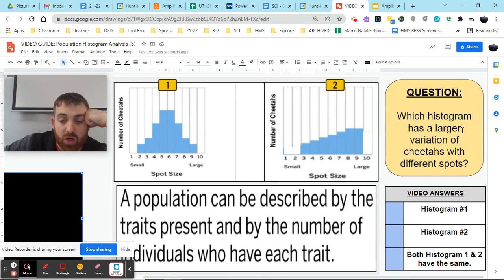So, which histogram has a larger variation of cheetahs? Well, that would be histogram number one. It has eight variations, and number two has seven variations.